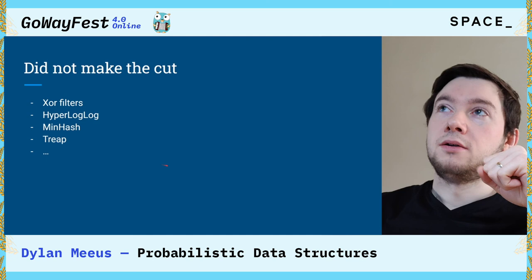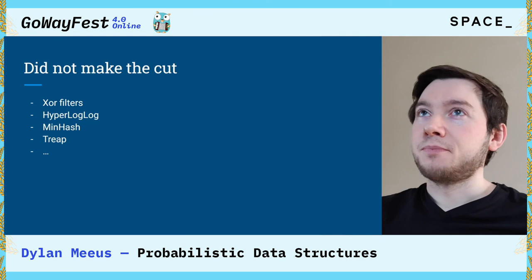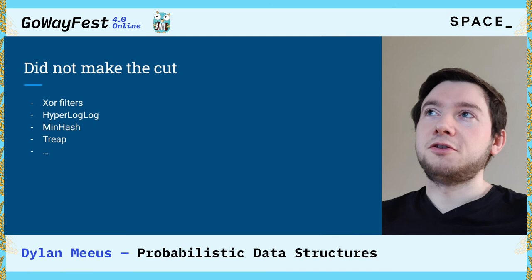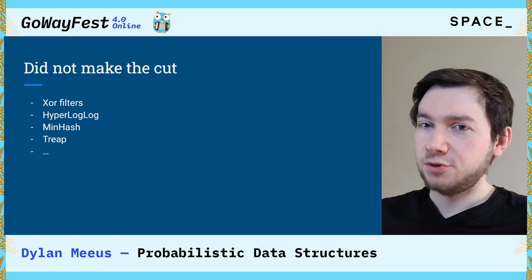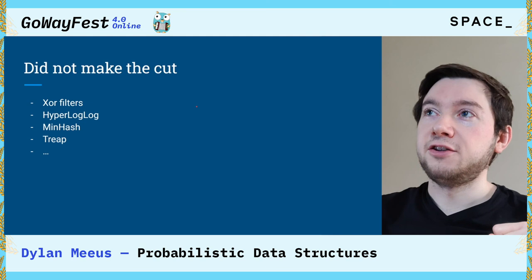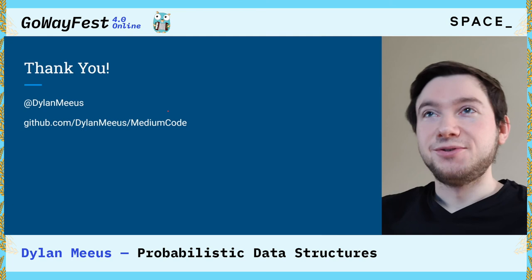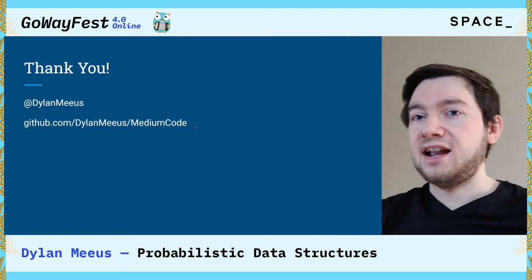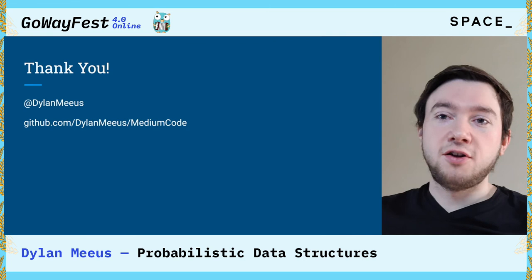That was a fast overview of two types of probabilistic data structures for storing data. There's more, of course — there's the XOR filter, which is something similar, and a whole host of other algorithms and data structures like HyperLogLog and MinHash. I couldn't go in depth on all of these, but some you can also find on my GitHub. Thank you — if you have questions, tweet them to me at Dylan Meyers, or check out the code on GitHub where you'll also find medium blog posts describing these data structures as well as links to the source material.